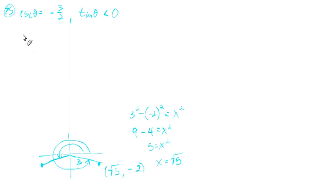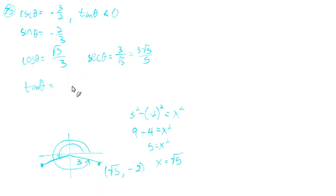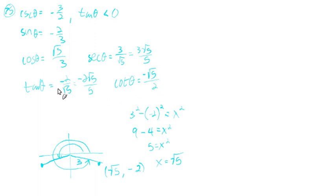We have the cosecant; we can find the sine — it's the reciprocal: negative 2/3. The cosine is x over r: √5 over 3. The secant is the reciprocal: 3 over √5, which rationalizes to 3√5 over 5. The tangent is y over x: negative 2 over √5, which rationalizes to negative 2√5 over 5. The cotangent is the reciprocal of the tangent: negative √5 over 2.